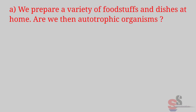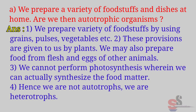Question 6: Think and answer. A. We prepare a variety of foodstuffs and dishes at home. Are we then autotrophic organisms? Answer: We prepare a variety of foodstuffs using grains, pulses, vegetables, etc. These provisions are given to us by plants. We may also prepare food from flesh and eggs of other animals. We cannot perform photosynthesis to actually synthesize food matter. Hence, we are not autotrophs — we are heterotrophs.